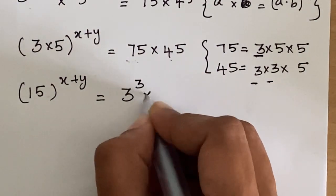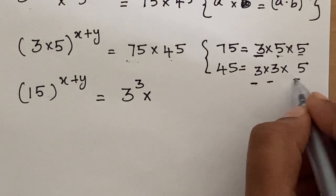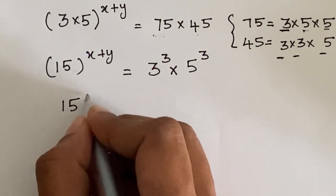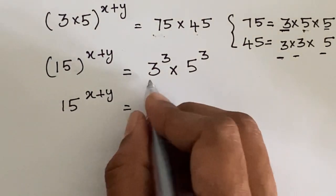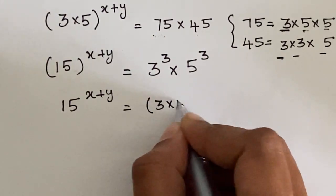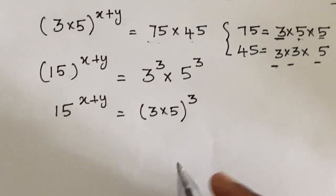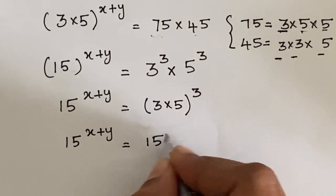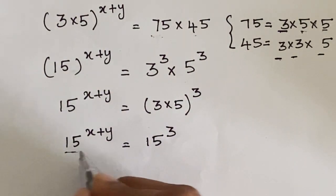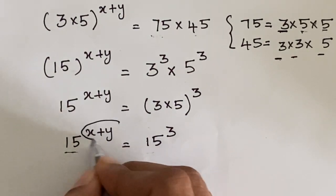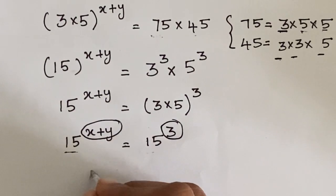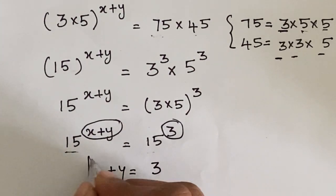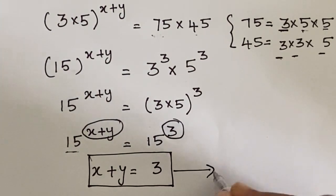Grouping all 3's together we have three 3's, so 3 cubed; similarly we have three 5's, so 5 cubed. Therefore 15 to the power x plus y equals (3 times 5) to the power 3, which is 15 to the power 3. Since the bases are the same, we equate the powers: x plus y equals 3. Let this be equation A.